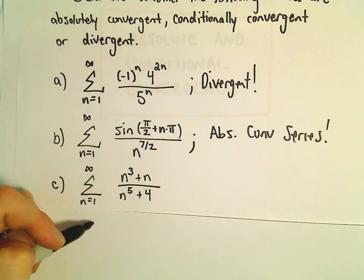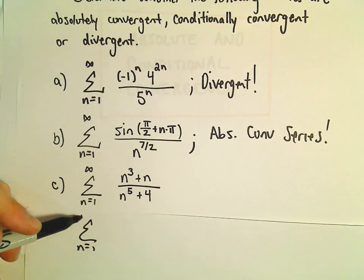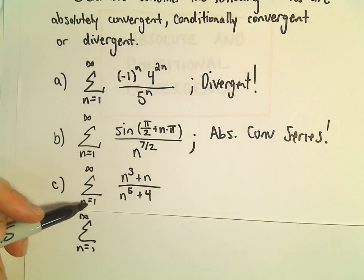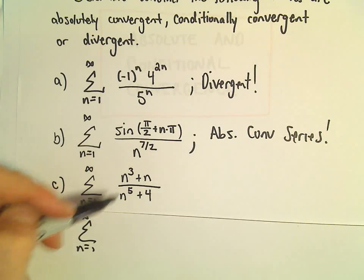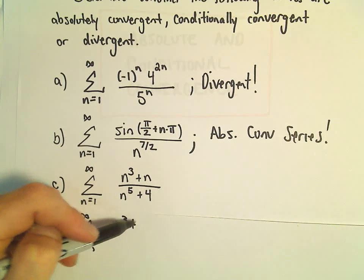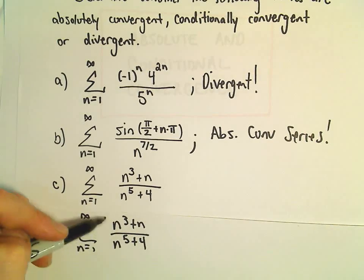Notice in this case, if you put it inside of absolute value, all of these terms are positive already. You know, if you plug in n equals 1, 2, 3, etc.